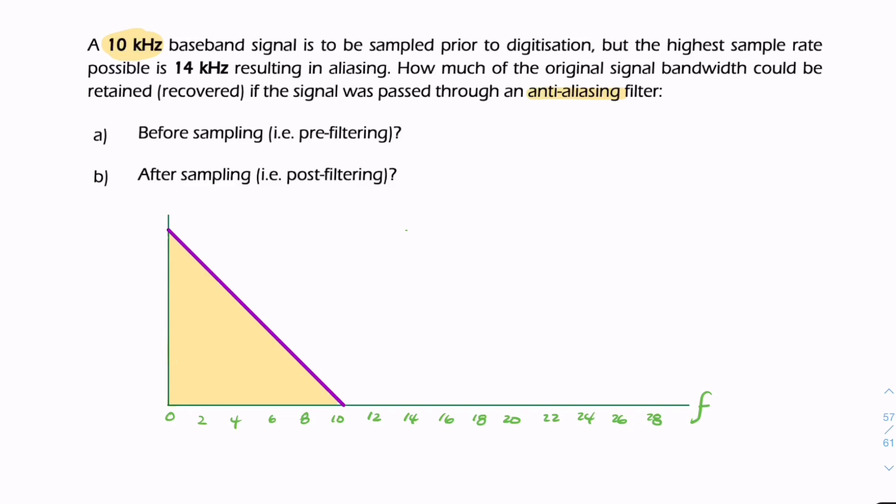the sampler is unable to sample at the Nyquist rate. The Nyquist rate is 2 times 10 kHz, so that's 20 kHz. The sampler can only sample at 14 kHz, meaning we have distortion, aliasing, and spectral overlap. To combat that,